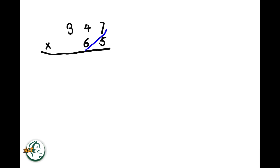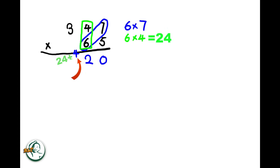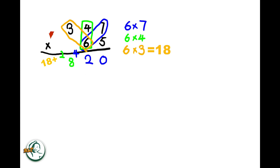Into another example, 347 times 65. Firstly, we start by writing down a 0. So, we multiply 6 by 7, giving us 42. We write down the 2 and carry over the 4. Next, we multiply 6 by 4, resulting in 24. Adding the carried over 4 to 24, we get 28. We write down the 8 and carry over the 2, and 6 multiplied by 3 is 18. Adding the carried over 2 to 18, we get 20.